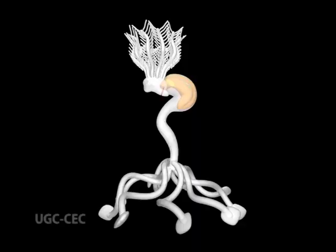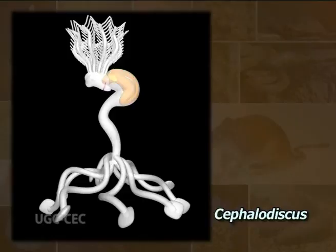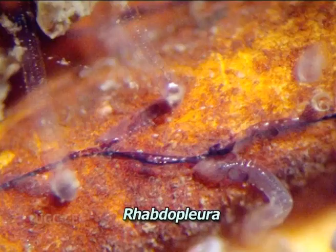Class 2: Pterobranchia — in Greek, pteron means feather and branchion means gill. These are sedentary, solitary or colonial and tubiculous marine animals. Gill slits are one pair or may be absent. Alimentary canal is U-shaped. Sexes are separate or united. Single pair of gonads and gill slits are present. Examples are Cephalodiscus and Rhabdopleura.